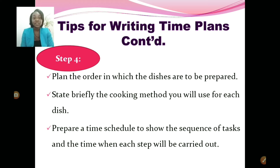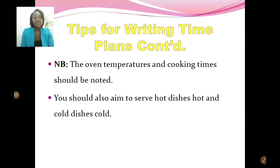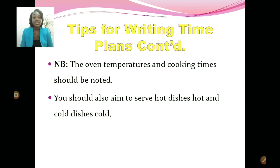Next, briefly state the cooking method you will use to prepare each dish. Then prepare a time schedule showing the sequence of tasks and when each step will be carried out. Note the oven temperature and cooking times — for example, preheat oven to 350°F, and if baking a cake, note it bakes for 30 to 45 minutes. You should also aim to serve hot dishes hot and cold dishes cold.